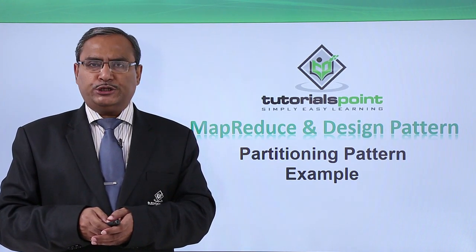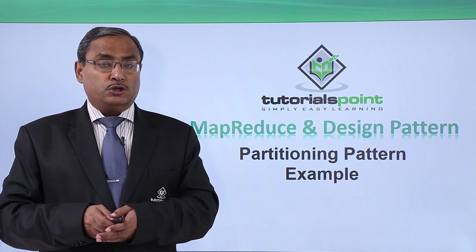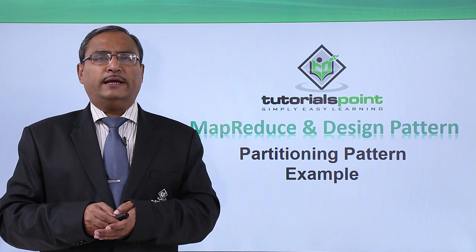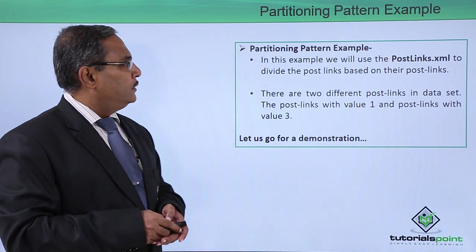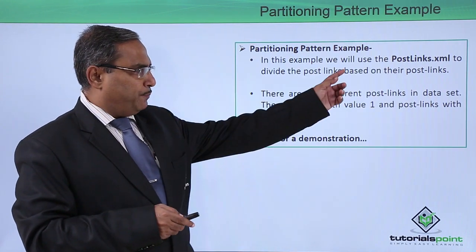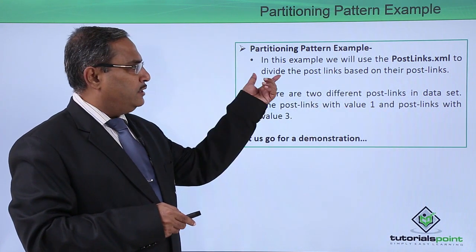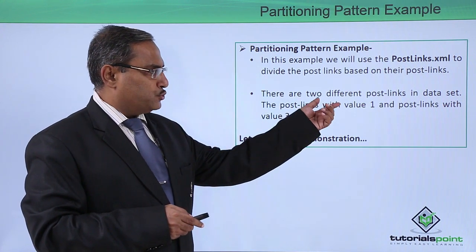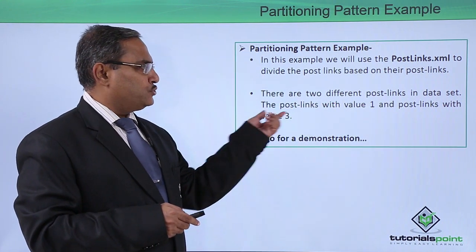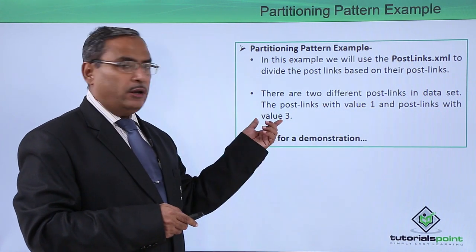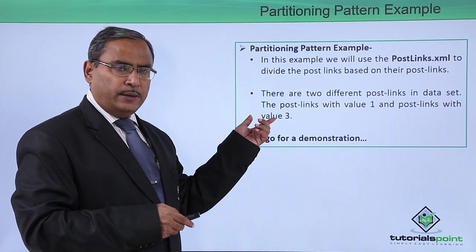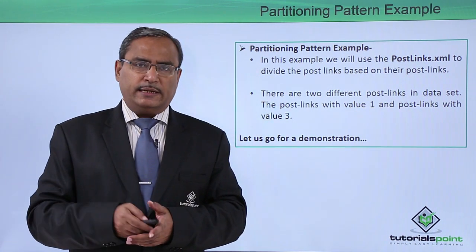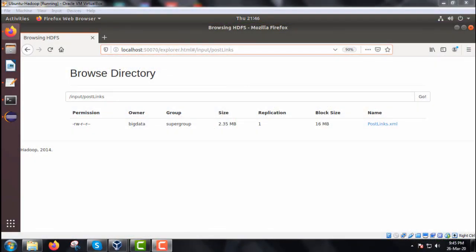In this video we are discussing a partitioning pattern example. This video will be associated with one practical demonstration for easy understanding of the implementation. In this example we shall be using the PostLinks.xml to divide the post links based on their respective criteria. There are two different post link types in the dataset: post links with value one and post links with value three.